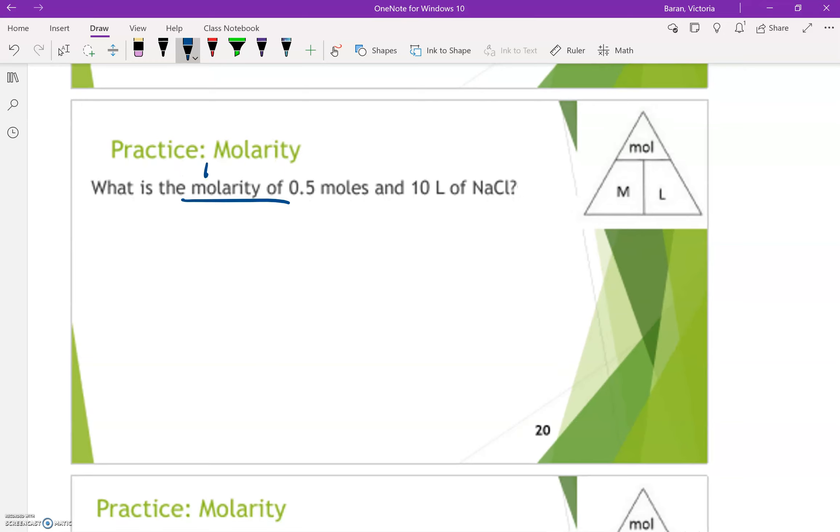All right. So what is the molarity? That's big M and molarity equals moles divided by liters, right? We're finding big M, which is moles divided by liters. I always like to write what equation I'm using first. Well, they give us moles, 0.5 moles and 10 liters.